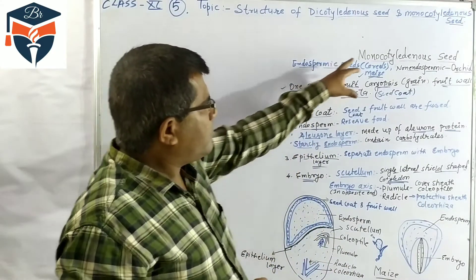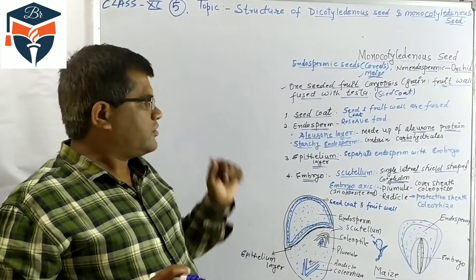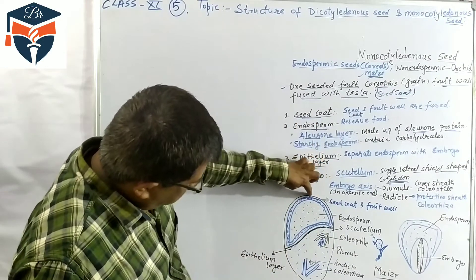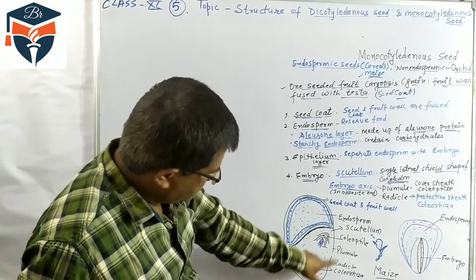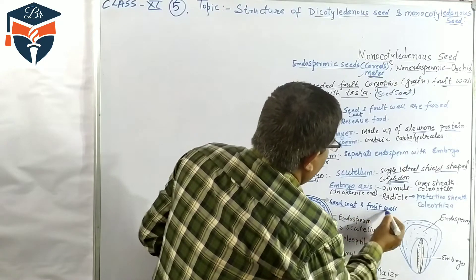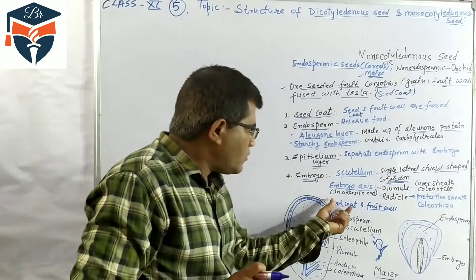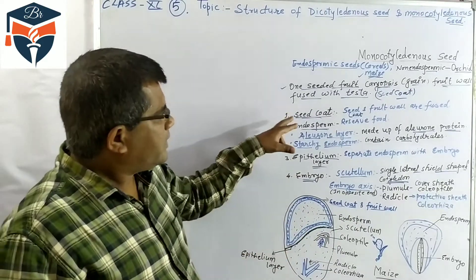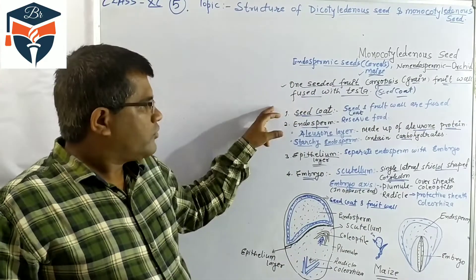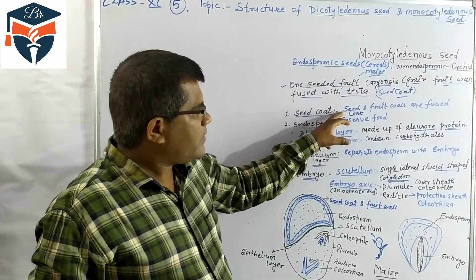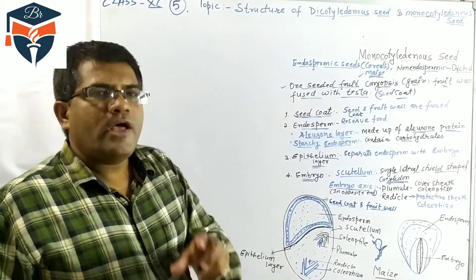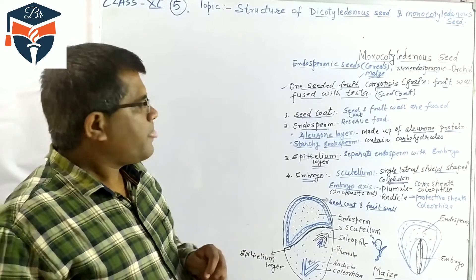Each monocotyledonous seed has the following structure. The first part is the seed coat, which is the outermost layer of the seed. This seed coat is formed by the fusion of the seed coat and fruit wall. The seed coat forms the brownish outer layer in maize.